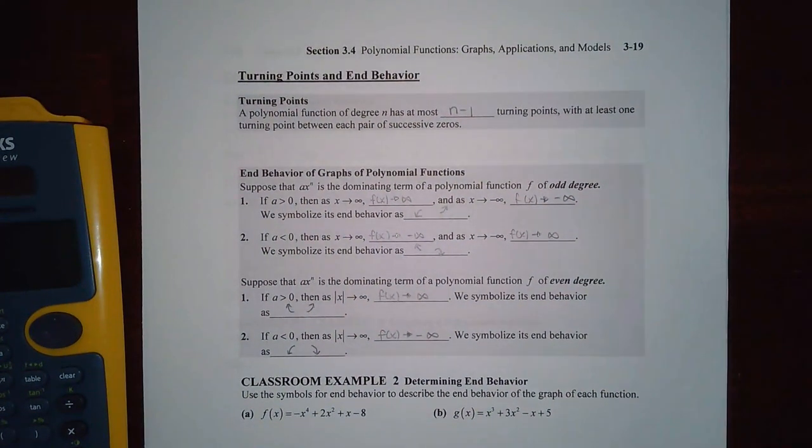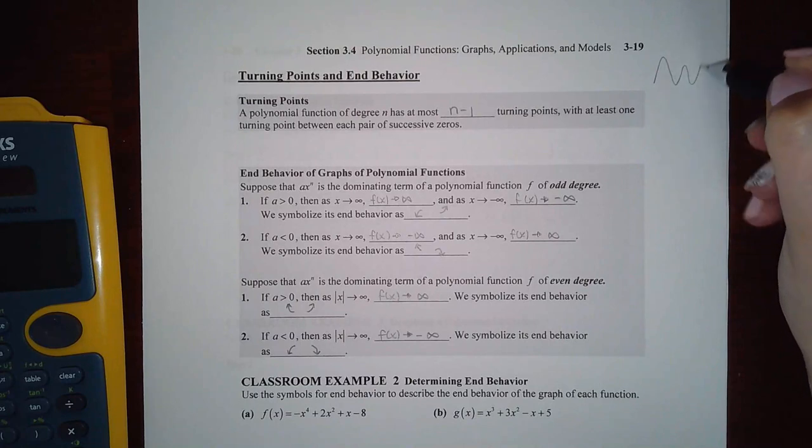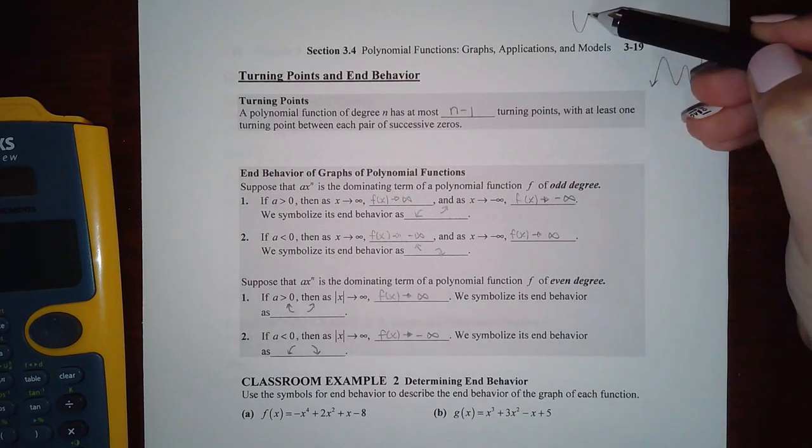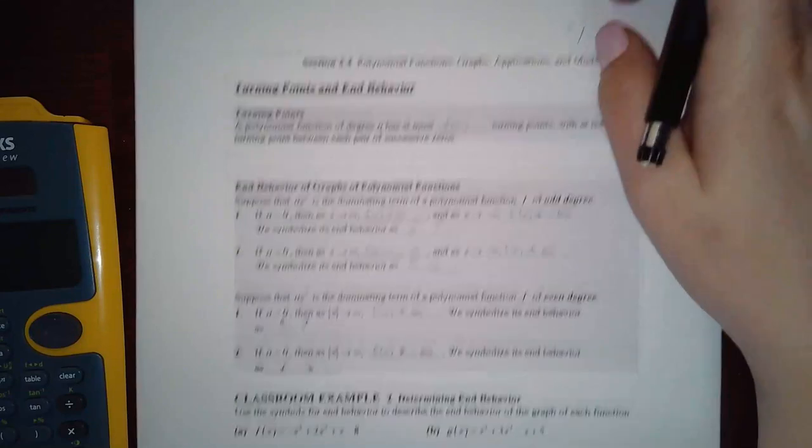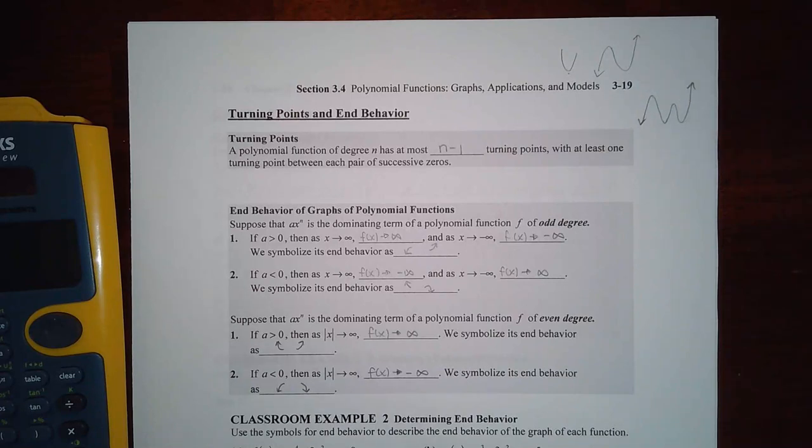Now another type of behavior that we want to know about is the end behavior, right? Was it going up on both sides? Is it going down on one side and up on the other side? What does the end behavior look like? And then another concept here is called turning points. So you're going to be graphing parabolas and they're going to be like these wavy little things that look like something like that. And so turning points would be like where the little vertexes are. So in a parabola you only have one vertex, right?